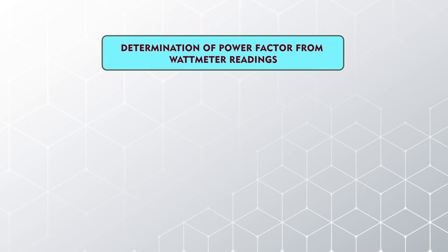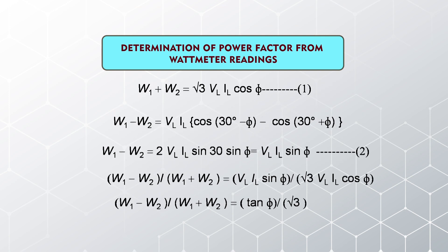Now, the determination of power factor from the wattmeter readings. If the readings of the 2 wattmeters are given, how do we find the value of the power factor? As we know, equation 1 is: W1 plus W2 equals √3·V_L·I_L·cosφ. Similarly, we can write: W1 minus W2 equals V_L·I_L·cos(30 minus φ) minus cos(30 plus φ). After solving, this expression becomes: W1 minus W2 equals 2·V_L·I_L·sin30·sinφ. Since sin30 equals 1/2, the 2 cancels, giving equation 2: W1 minus W2 equals V_L·I_L·sinφ.